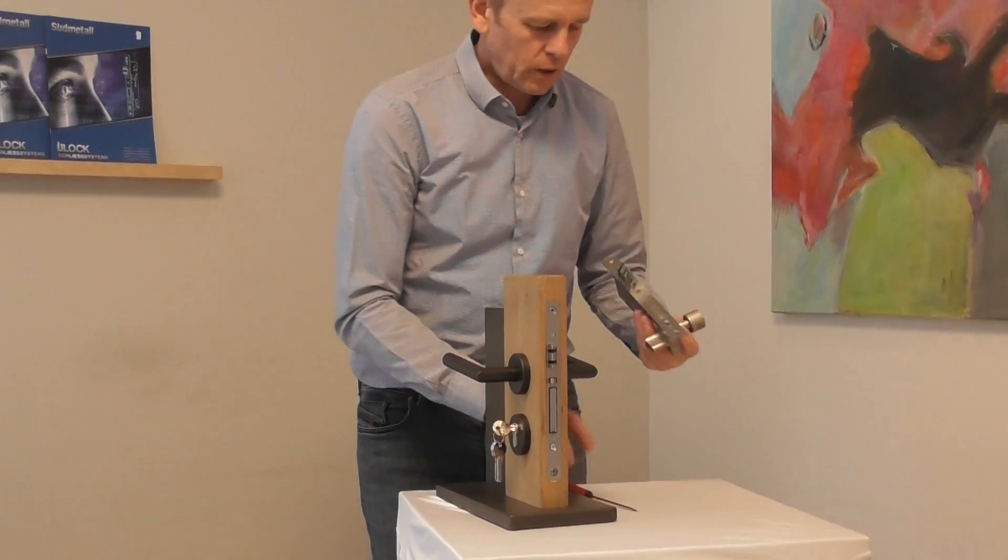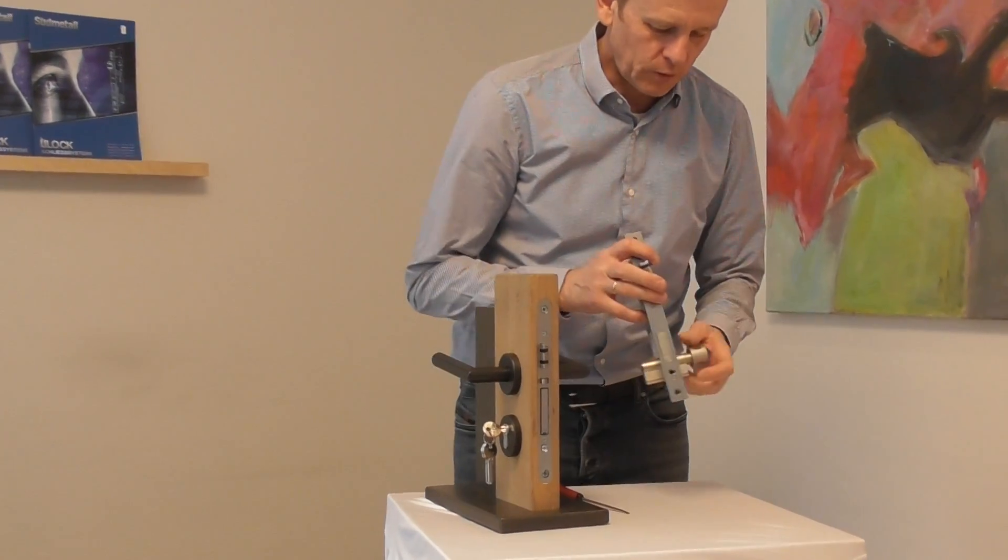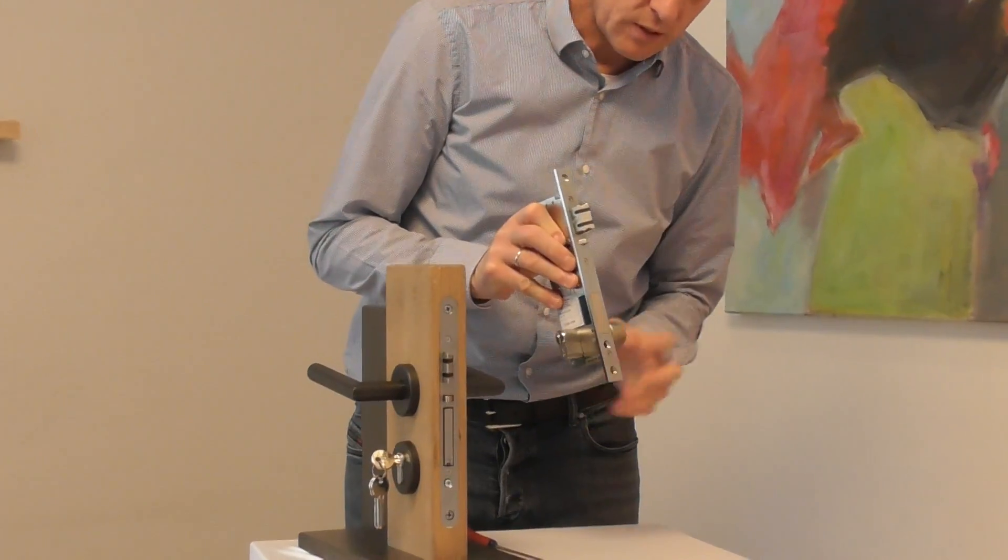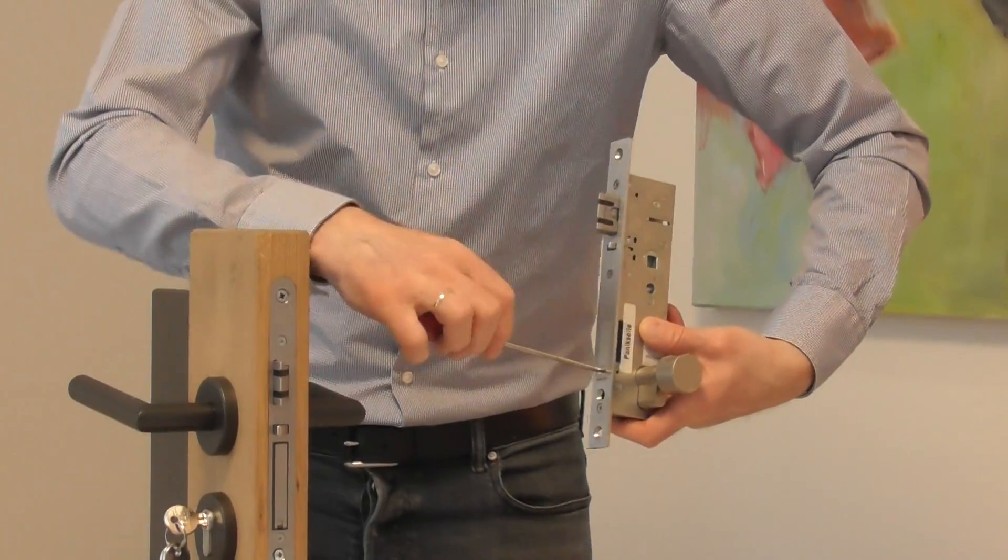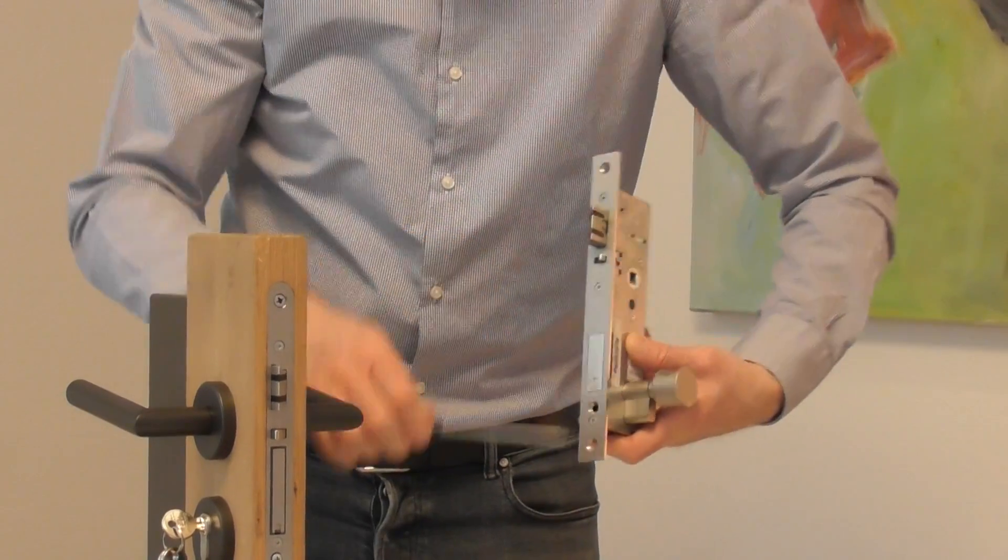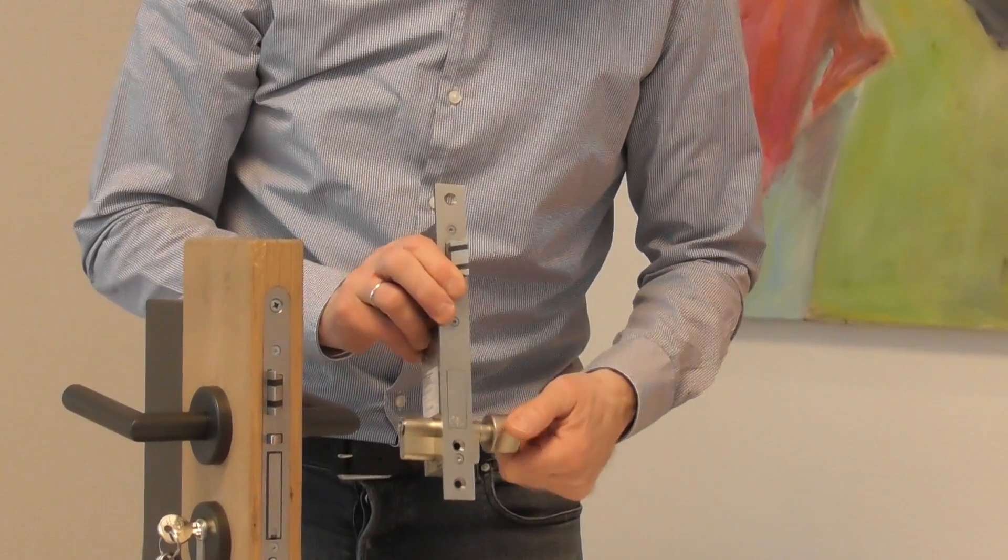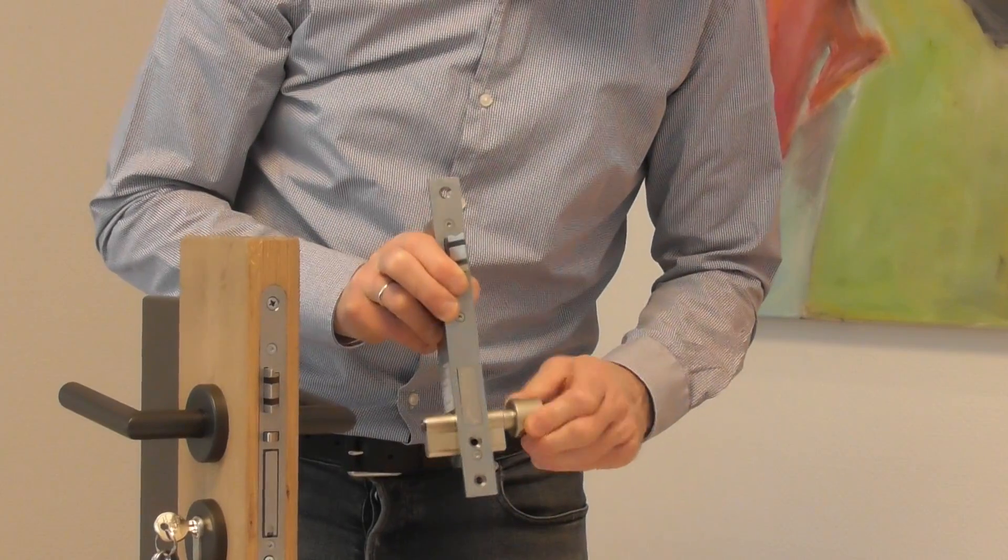Now I'll show you how it works with the lock for copper doors. The cover is a bit different. There's a screw here that can be turned into this position or this position, and now it's protected.